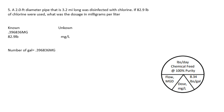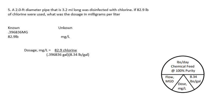To get dosage in milligrams per liter, divide the pounds of chlorine by million gallons times 8.34 pounds per gallon. Note: this is total volume, not flow per day. Plug in: 82.9 divided by (0.396836 times 8.34) equals 82.9 divided by 3.31. You get a dose of 25.05 milligrams per liter.